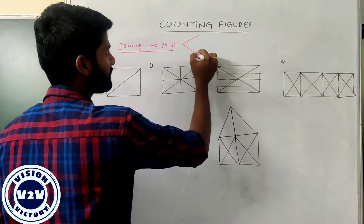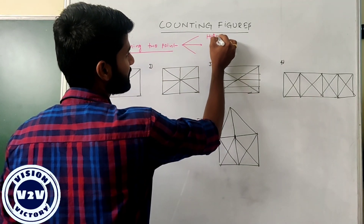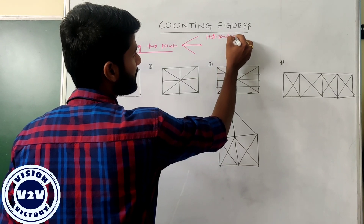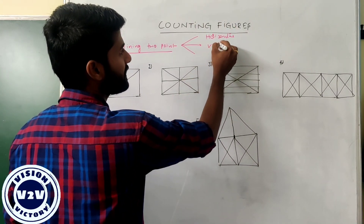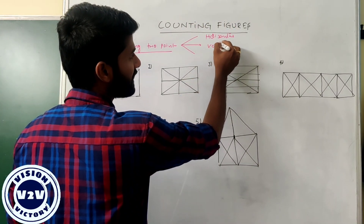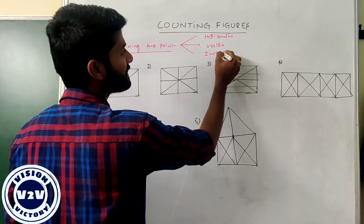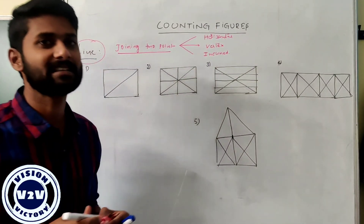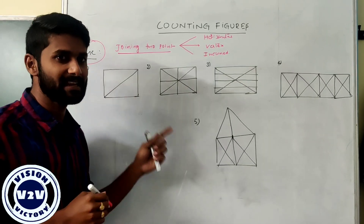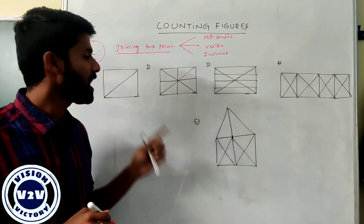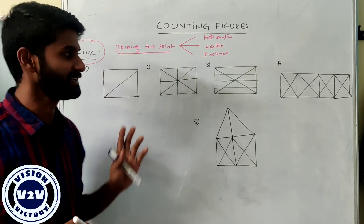If there are three types of lines, first count how many horizontals there are, then how many verticals there are, then how many inclined lines there are — lines making some angle. These are the three types of lines. So if you count any line, focus on how many vertical, how many horizontal, and how many inclined lines there are.